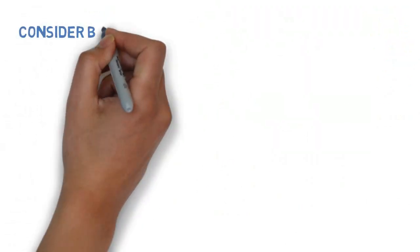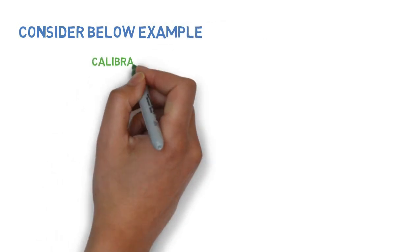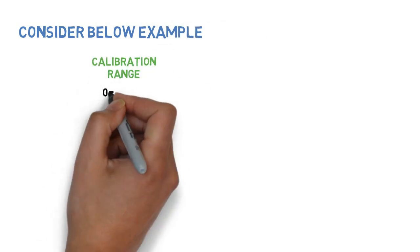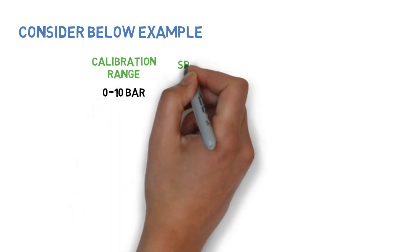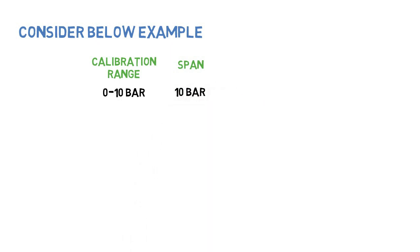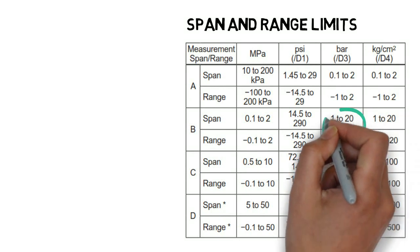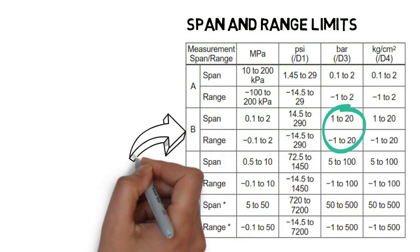Let us consider below example. Calibration range: 0 to 10 bar. Span: 10 bar. Capsule: Based on the calibration range and span, we are selecting capsule B.